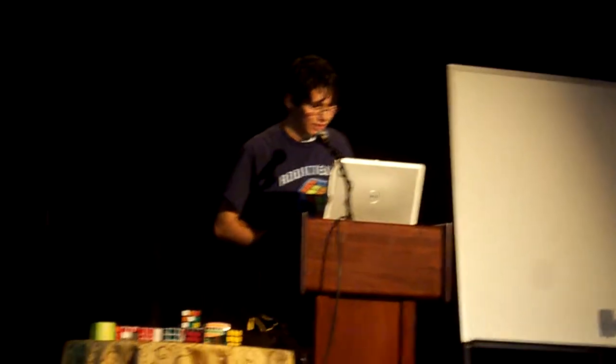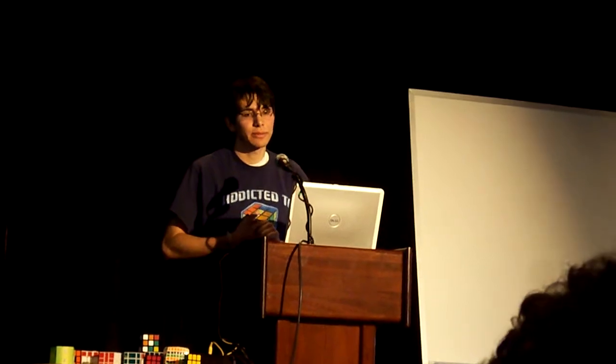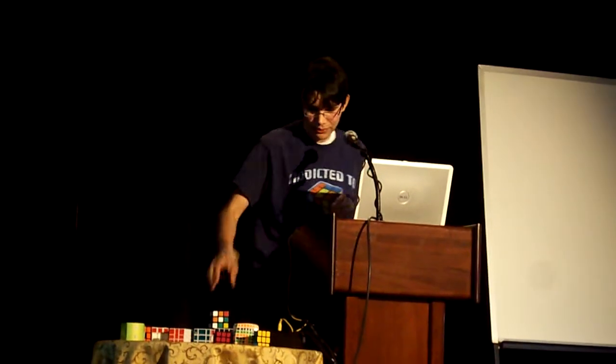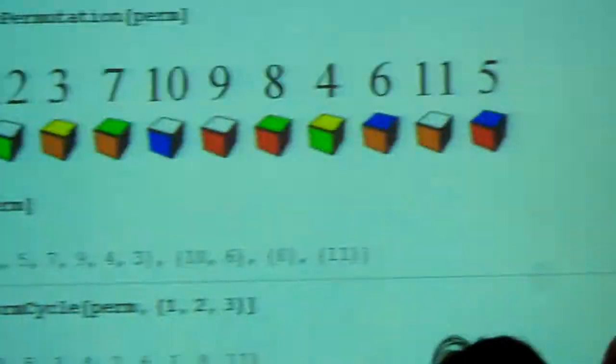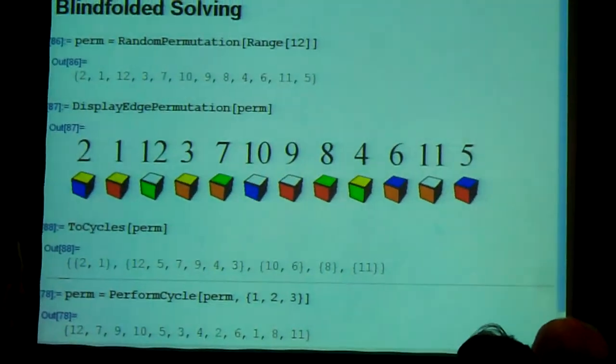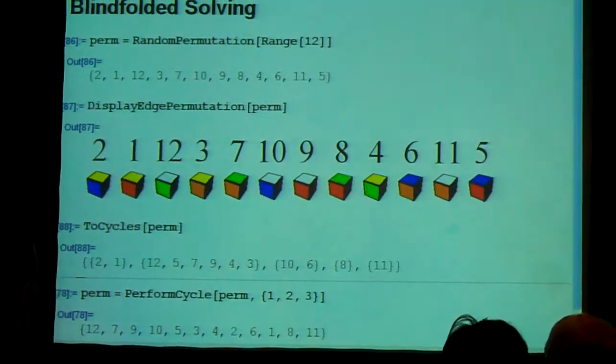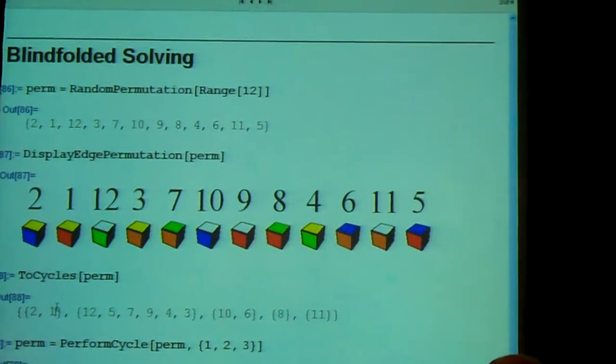When you solve it blindfolded, what you do is you get a random position and you don't use your normal speed-solving method. The approach that people use is they decompose it into cycles. So I look at this cube and I see, for example, here that the piece at position 2 - the piece in the first position is at position 1 and it needs to go to 2. And then at 2, there's a 1, and it needs to go back. So if you look at the cycle structure down here, 2 goes to 1.